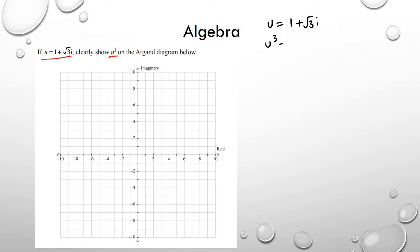u cubed is equal to (1 + √3i) cubed. If I expand this out, I get (1 + √3i)(1 + √3i)(1 + √3i). Expanding this out, this is just like a normal quadratic. I expand this up so I get 1 + √3i + another √3i, and then plus 3i squared.